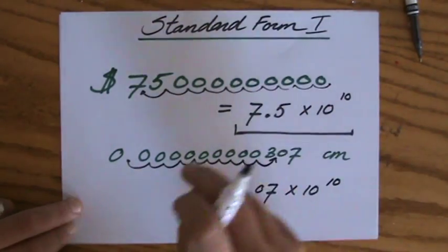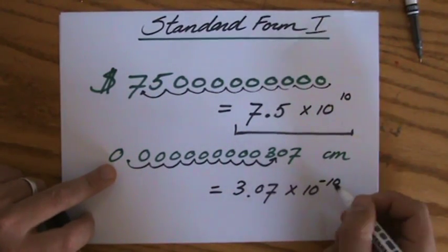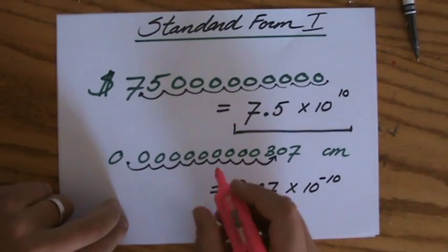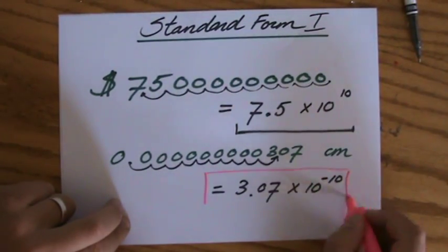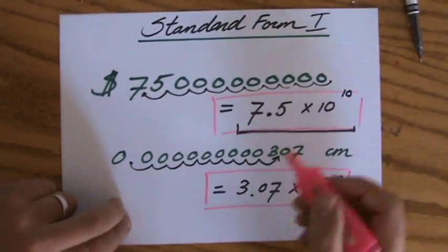Hang on a minute. It is a very small number, so it's not to the power 10, to the power minus 10. Yeah, where a very small number in standard form is to the power negative, and a very large number is to the power of positive.